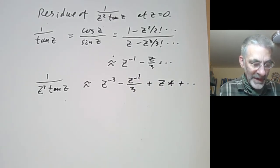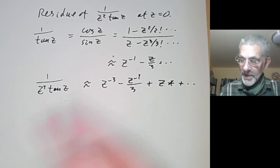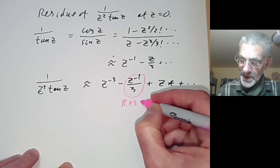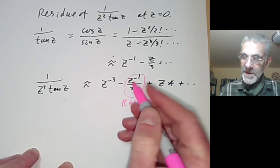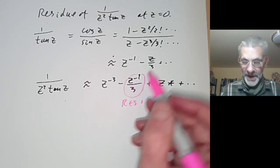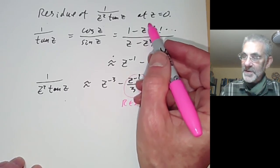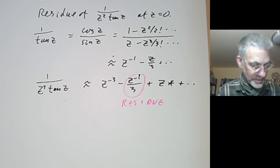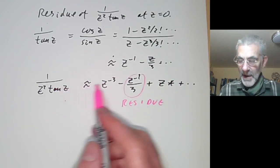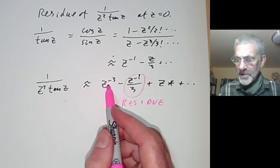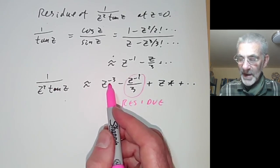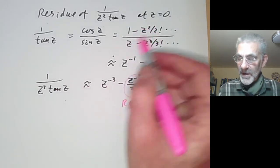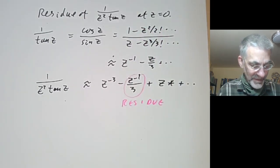To find the residue we need the coefficient of z⁻¹, which is −1/3. Notice that to get z⁻¹ in the final expansion we needed to go as far as z² in the cosine and z³ in the sine. This illustrates why working out residues of poles of order three is trickier than poles of order one — we need more terms of the power series.